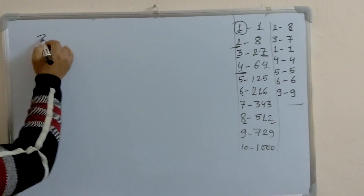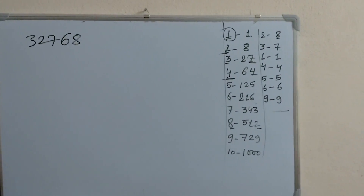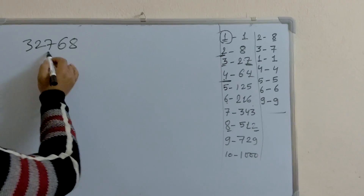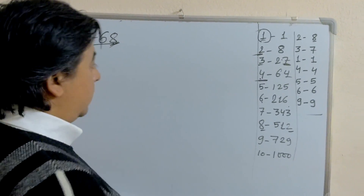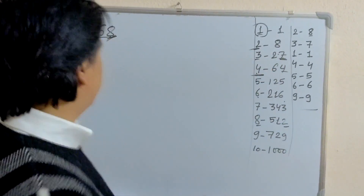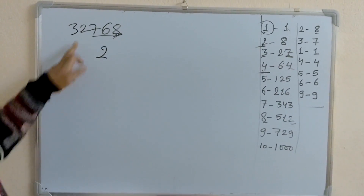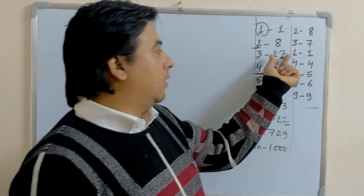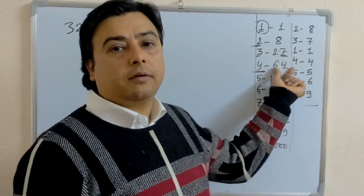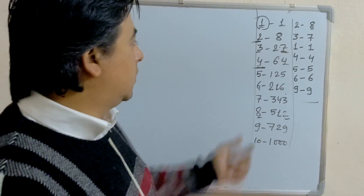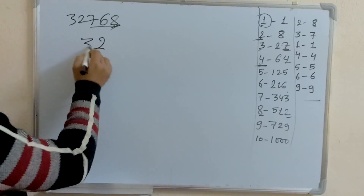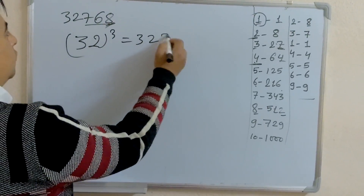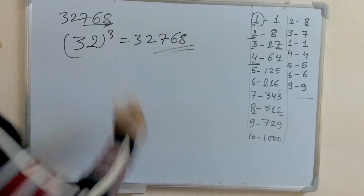Let's take the next example: 32768. See the last 3 digits — 768. The last digit is 8, which means 2. Write 2. The remaining number is 32, which lies between 27 and 64, so take the smallest one — 27 is 3 cubed, so write 3. Therefore, 32 cubed equals 32768.